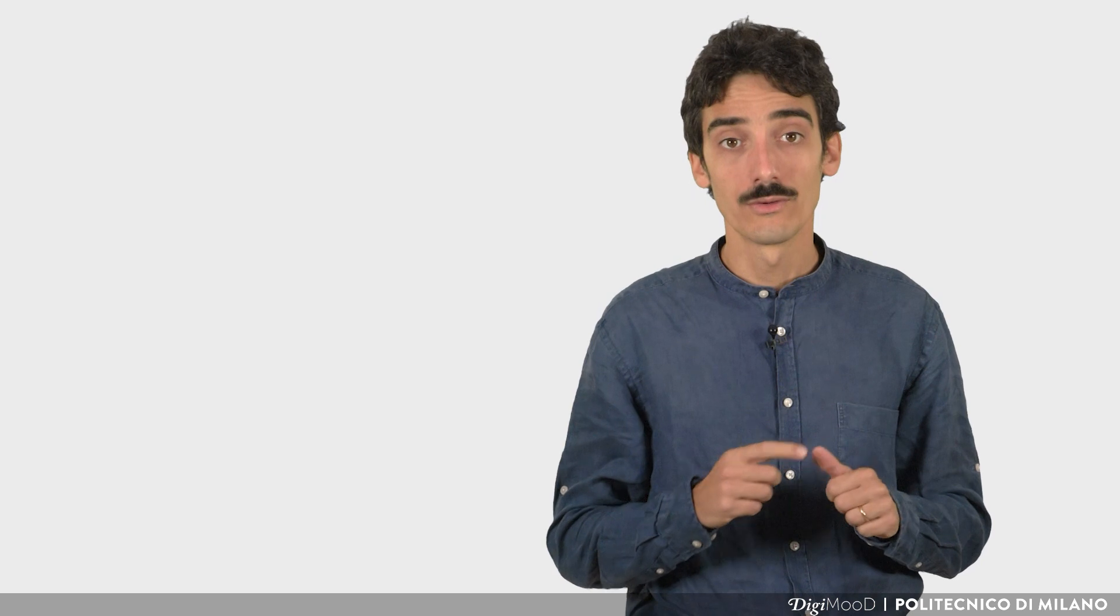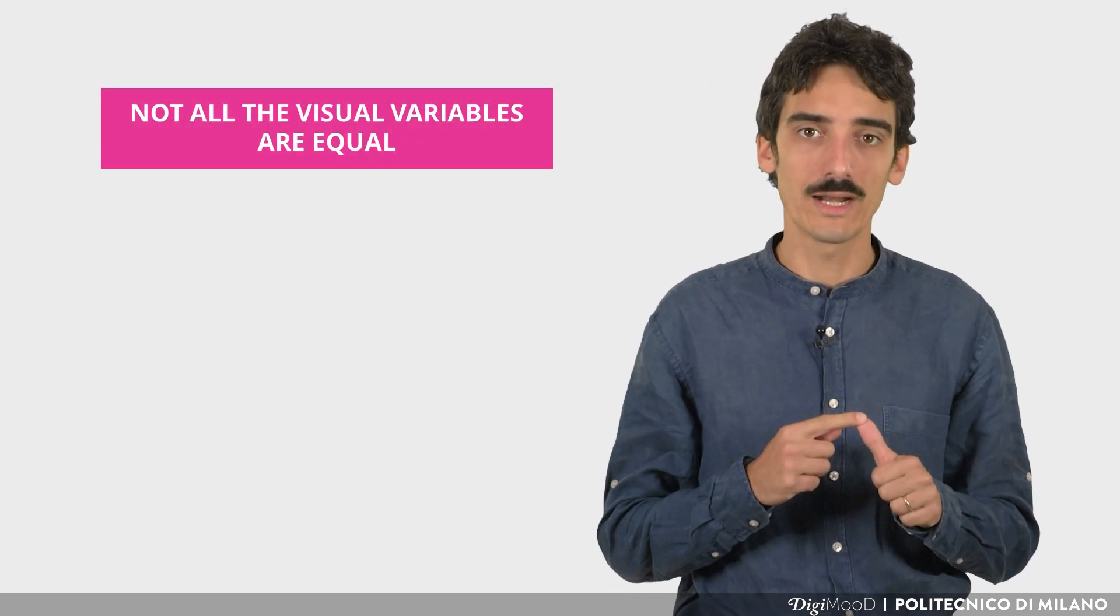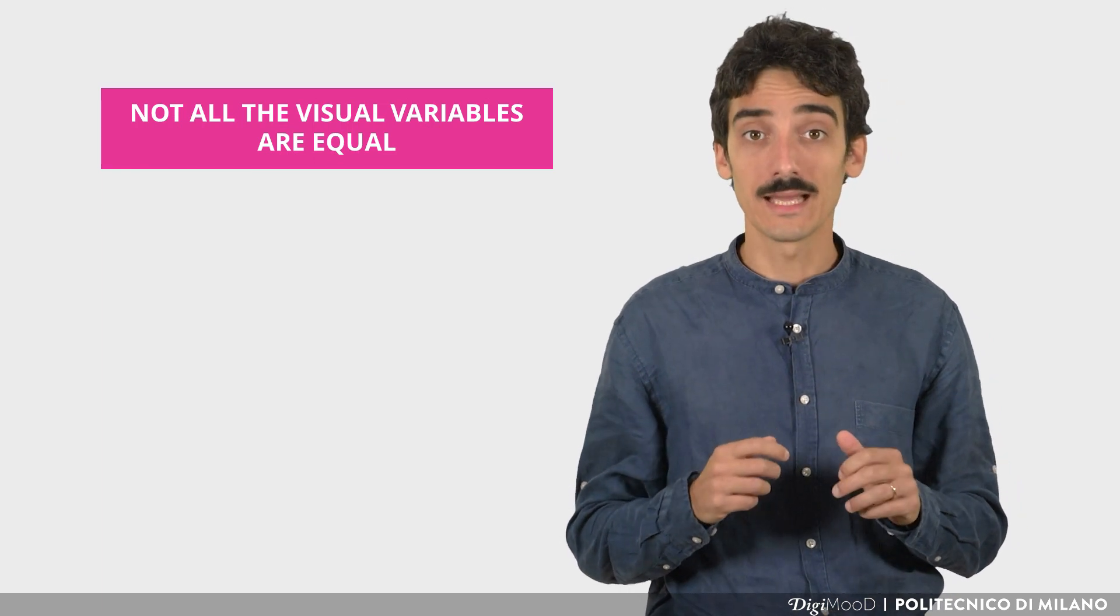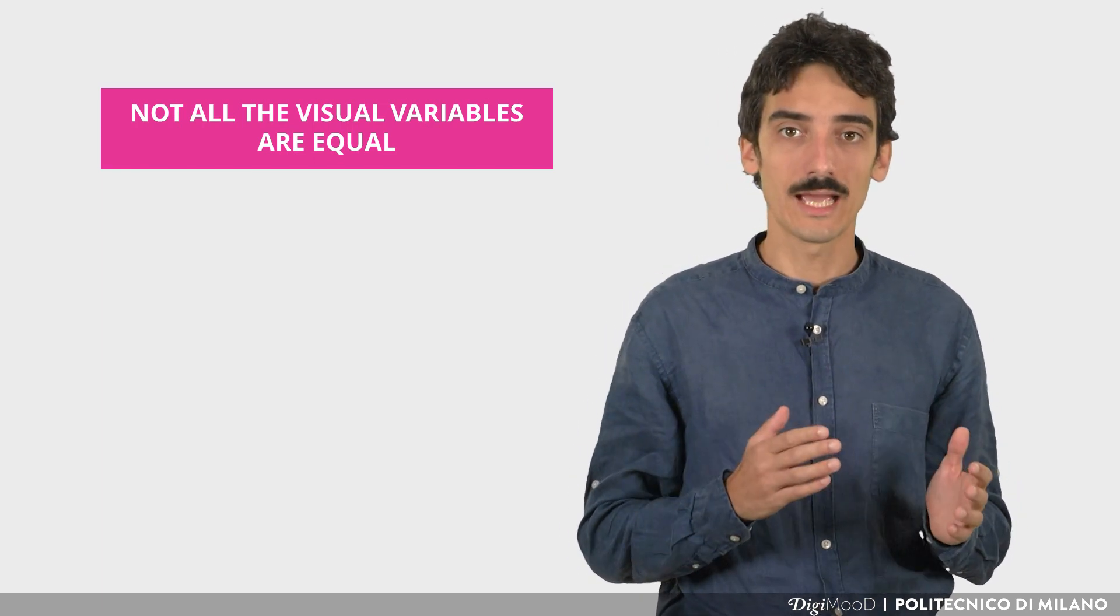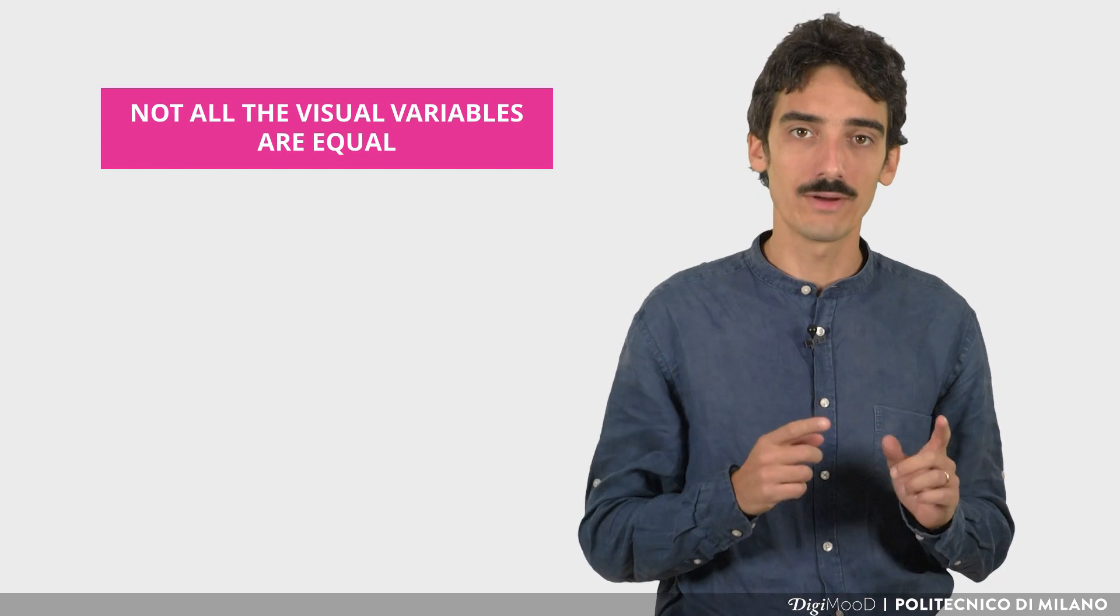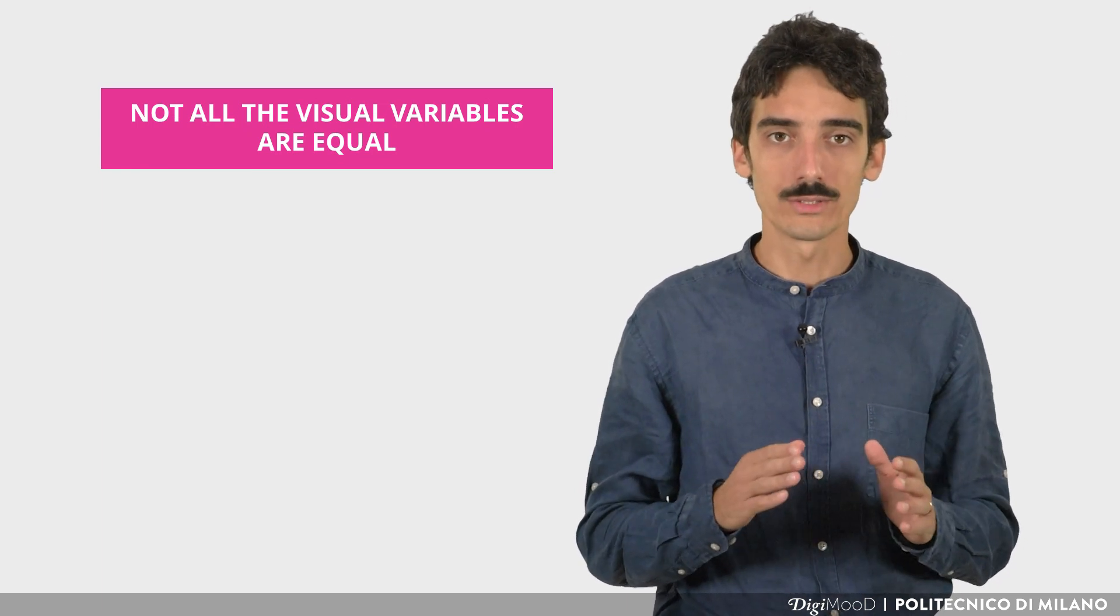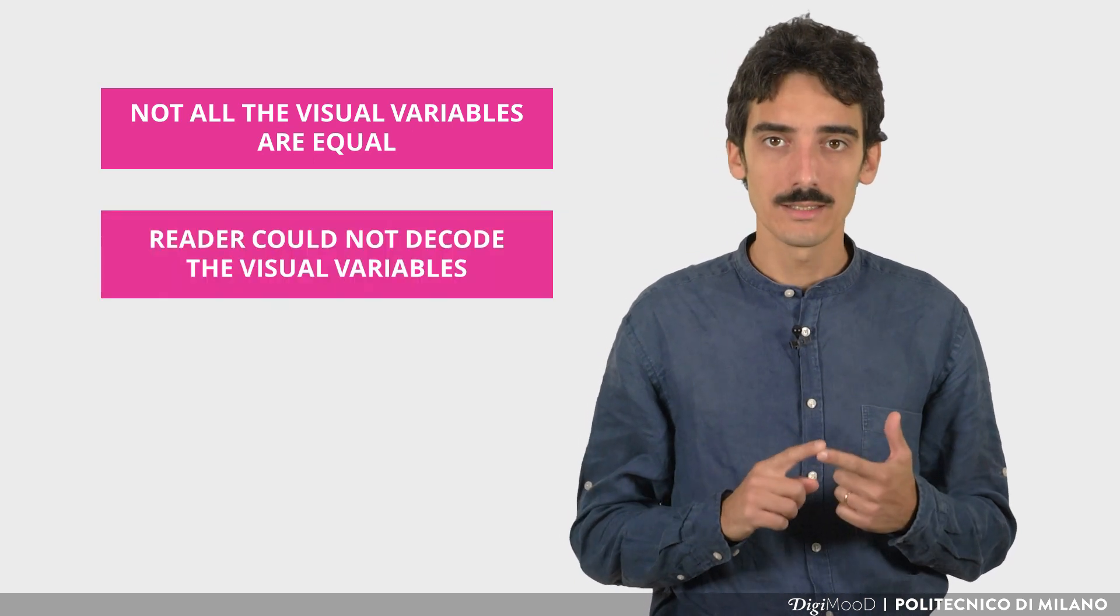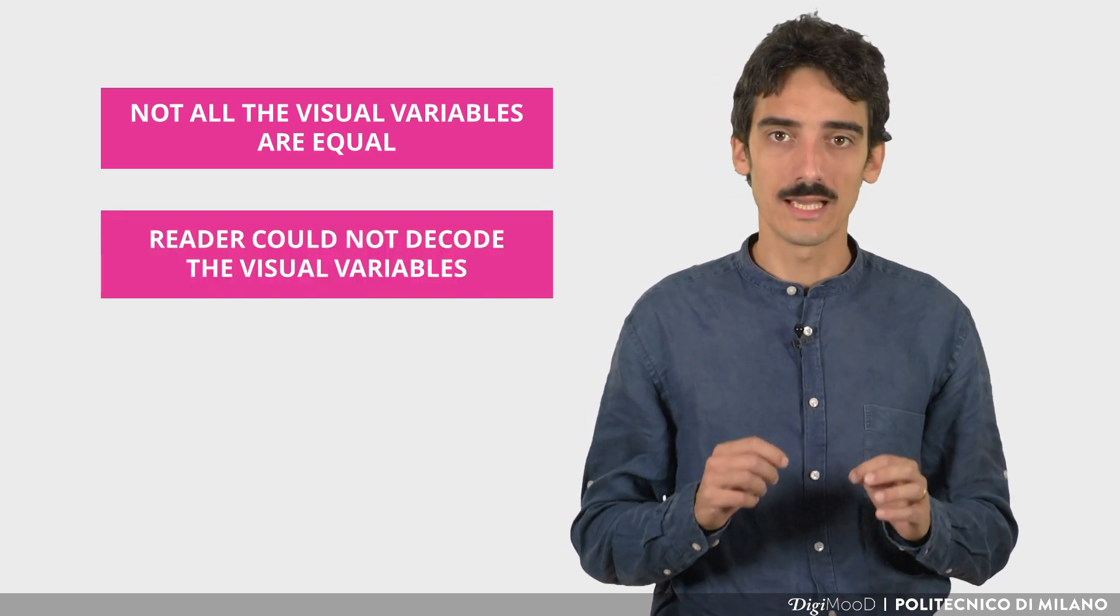So, two reflections are relevant. First, not all the visual variables are equal. Some of them are stronger. This means that, in the moment we decide to encode data with a particular variable, we are defining also the relevance of such data. Secondly, you can encode as much data as you want, but this won't mean that your reader will be able to decode it.